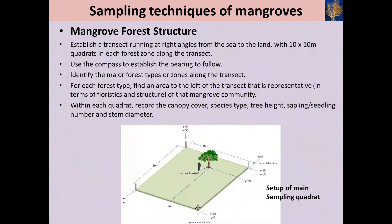Let's see what are the sampling techniques of the mangrove forest patch. When measuring the canopy cover or diameter of the mangrove forest patch, this should be undertaken in a single 50 by 10 meter plot, because this quadrat is considered as the main sampling quadrat. This figure shows the typical sampling quadrat of the mangrove forest patch. Initially, you should establish a transect running at right angles from the sea to the land.